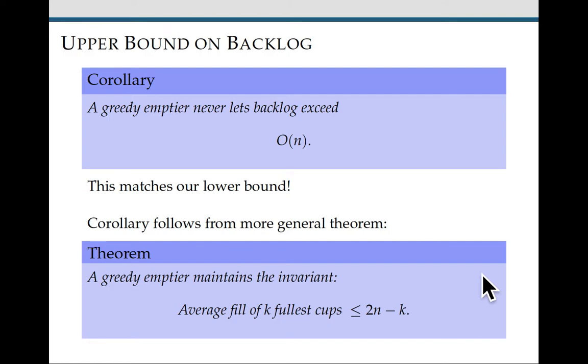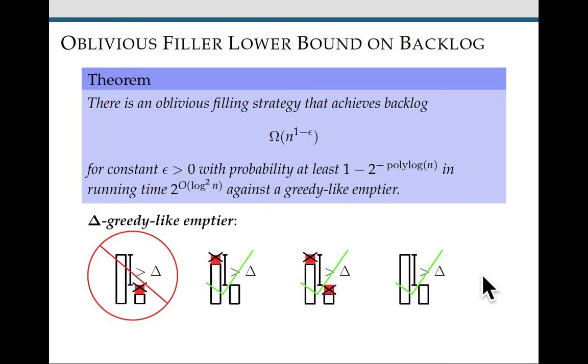Next, we looked at the variable processor cup game for an oblivious filler. And here, really surprisingly, it turns out that an oblivious filler can still get polynomial backlog. Even though it is blindfolded and has this seemingly really big disadvantage, it can still get polynomial backlog.